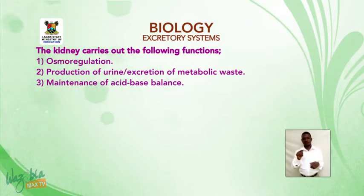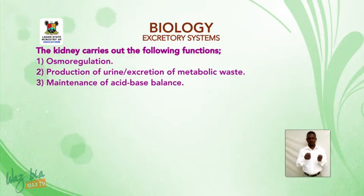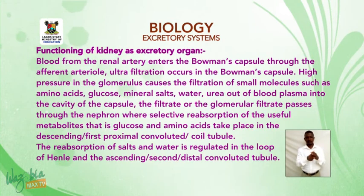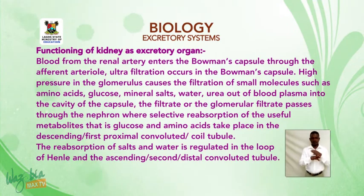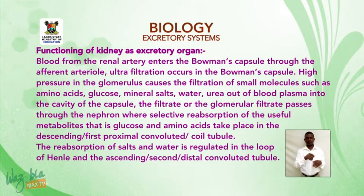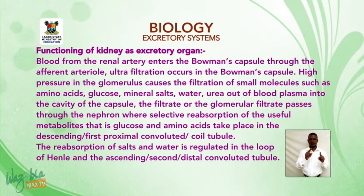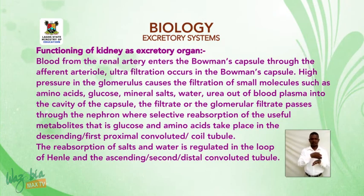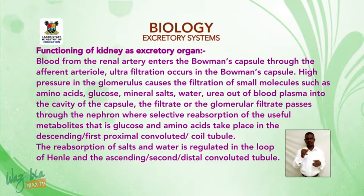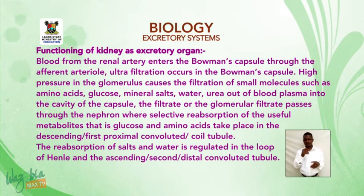The kidney carries out the following functions: osmoregulation, production of urine, and maintenance of acid-base balance. Blood from the renal artery enters the Bowman's capsule through the afferent arteriole. Ultrafiltration occurs in the Bowman's capsule: high pressure in the glomerulus causes filtration of small molecules such as amino acids, glucose, mineral salts, water, and urea out of the blood plasma into the cavity of the capsule.